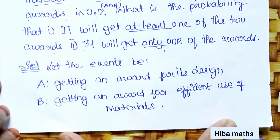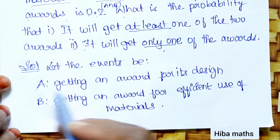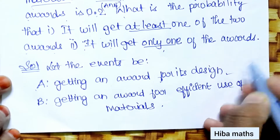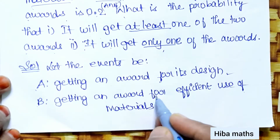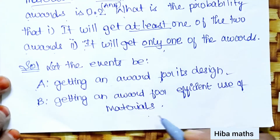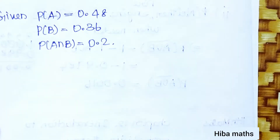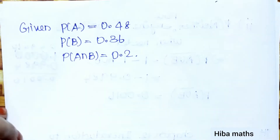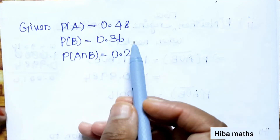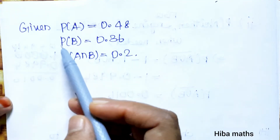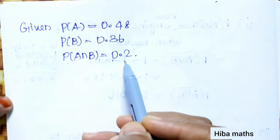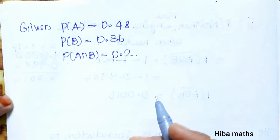Let the events be: A = getting an award for its design, B = getting an award for its efficient use of material. Given: P(A) = 0.48, P(B) = 0.36, and P(A∩B) = 0.20.